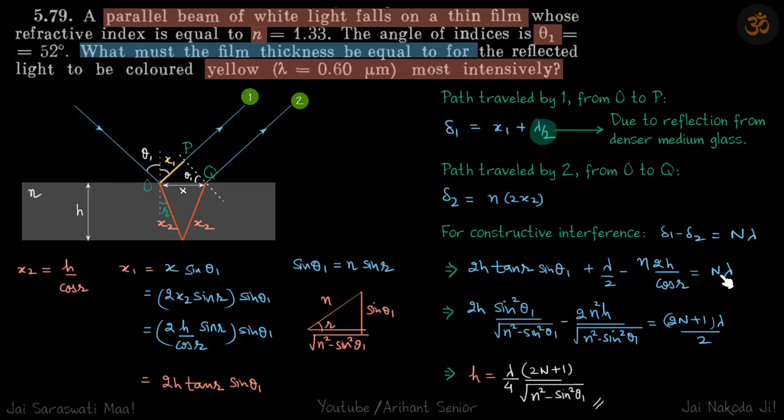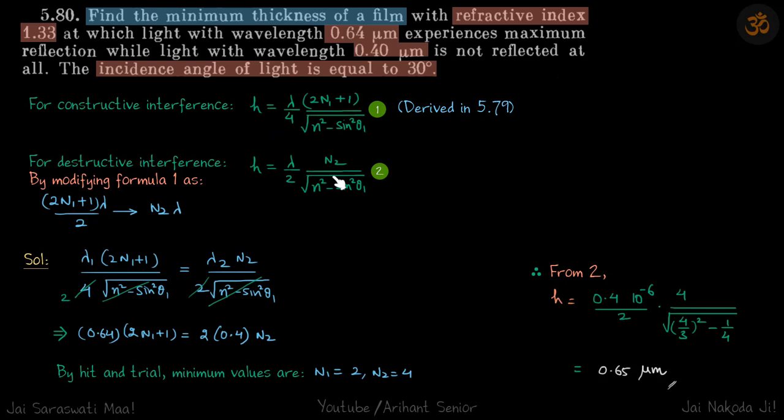When you do that, lambda by 2 will get cancelled, and therefore the new equation, instead of 2n plus 1 lambda by 4, you will get n lambda by 2. n1 and n2 are just different variables, so where we had 2n plus 1 lambda by 2, that will be replaced by n times lambda.